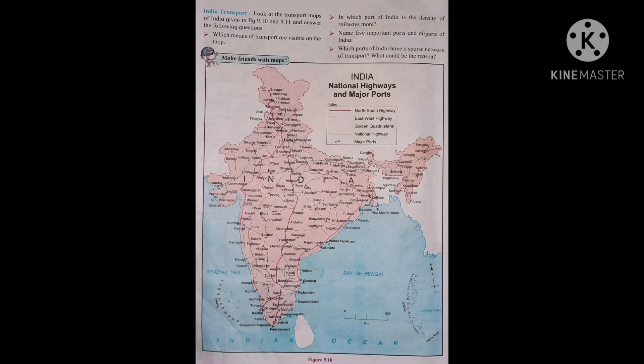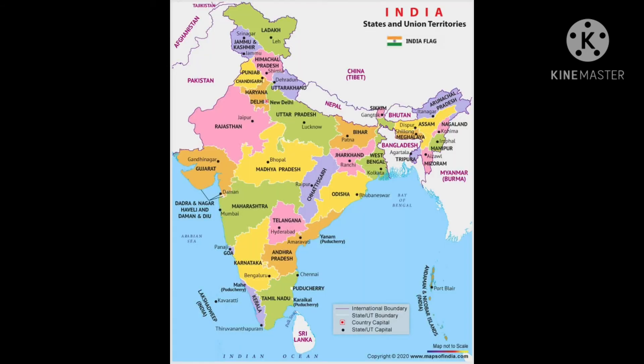Which part of India has a sparse network or less network of transport, and what could be the reason? The north and the north-east parts of India have a sparse network of transport. The reason is that this area is a mountainous and snow-covered region in the north, and has dense, inaccessible forests in the north-east. The transportation network is sparse here, and this region also has a low population and lack of economic opportunities.